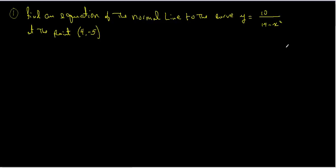Here we have a fractional expression, so we have to find the derivative of that, and for that we're going to use the quotient rule. If you recall, it's the lower function — which is 14 minus x squared — multiplied by the derivative of the upper function. Since the derivative of a constant is 0, we multiply that by 0.